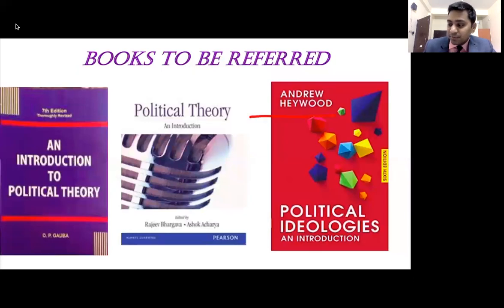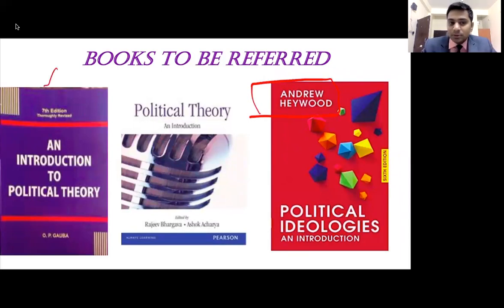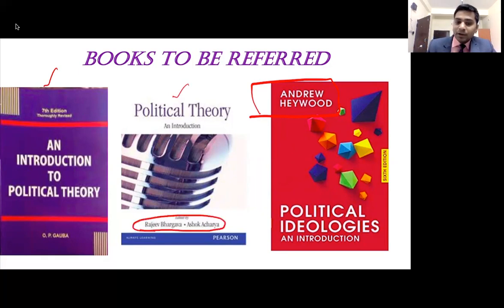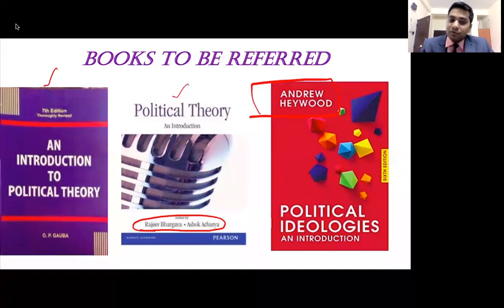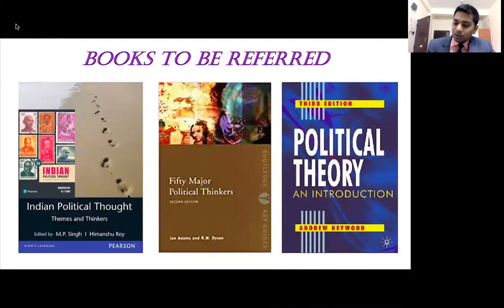Andrew Heywood's books are a bit advanced — you can read them last. But this book contains entire chapters particularly up to ideologies, covering Chapters 1 to 8. Rajiv Bhargava and Ashok Acharya have given the political aspects such as democracy, rights, power, justice, and equality very clearly in those chapters. I'll share the book and also the specific concepts you need to read. If you read it like a novel after understanding the concepts, it will help you. For Indian Political Thought, Chapter 9, there is a specific book to refer to.